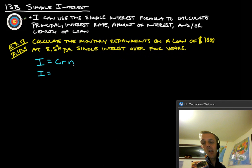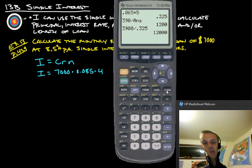Okay? So, interest in this case is going to be C, which is $7,000. The rate is 8.5%, so that's 0.085. And then the number of years is 4. Alright? So, let's use our calculator to figure that out. We take 7,000 times 0.085 times 4. And that gives us 2380.